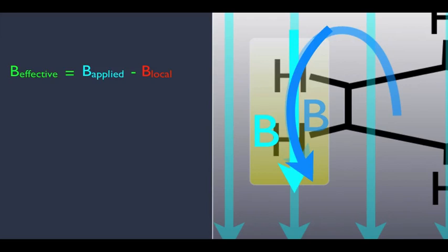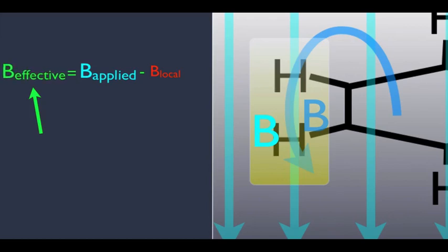That means that in our formula, the B applied right here is going to be even bigger. And think about what that does to our equation. Making that value larger means the B effective for those hydrogens in that yellow box is also going to be bigger.